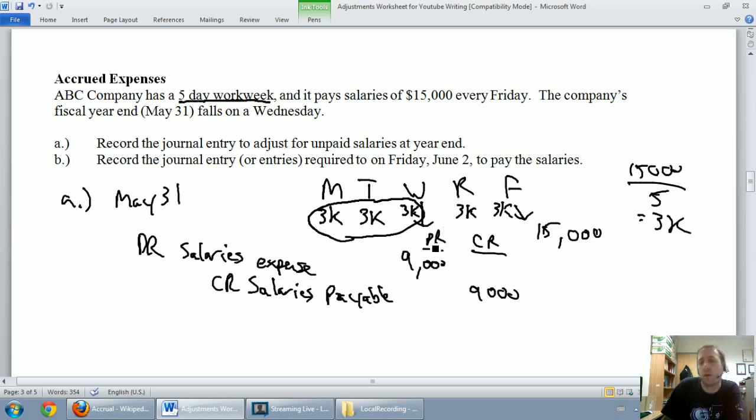We're almost always going to be crediting some sort of a payable because it's an expense that's built up over time that we haven't paid yet. So that results in a liability, a payable. Just think about our rules of debits and credits - we debit expenses to make them go up, we credit liabilities or payables to make them go up. I owed them nothing in salaries as of the previous Friday when I paid all the salaries. Now I owe them $9,000, so I credit that $9,000 to say I owe them now.